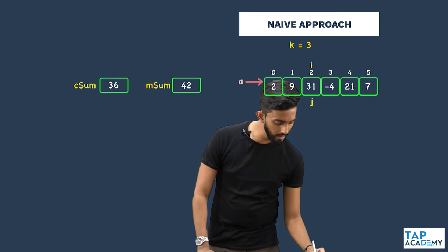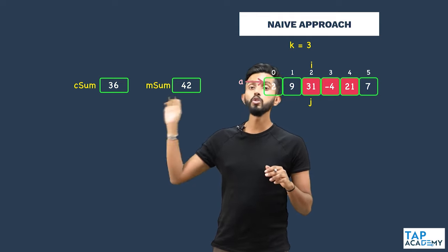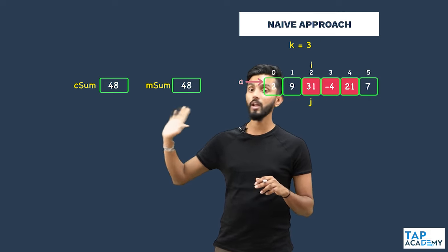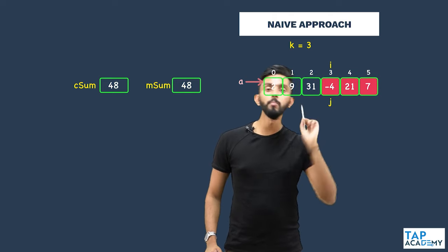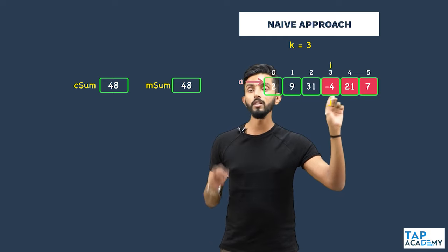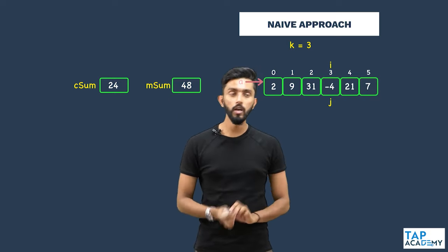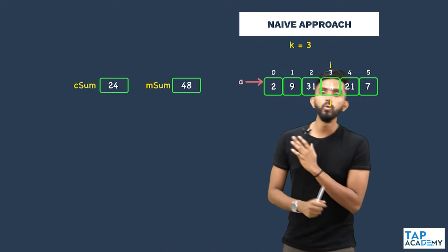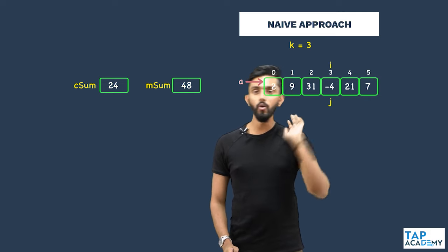Then i moves forward, j starts from i again, and finds the next subarray sum: 9 plus 31 minus 4 equals 36. Since 36 is not greater than 42, m_sum stays at 42. Moving i forward again yields current sum 48, which is greater than 42, so m_sum updates to 48. The next subarray sum is 24, which is less than 48, so m_sum stays. We stop at the third-last element so as not to go out of bounds.